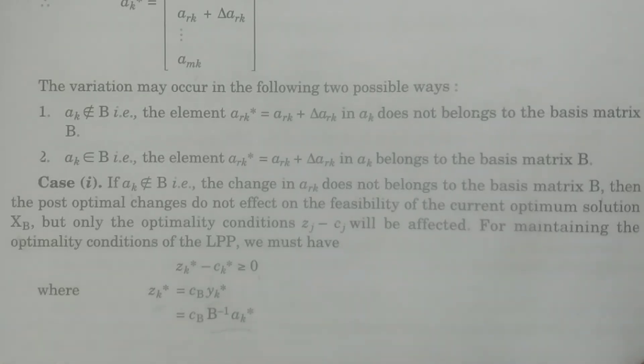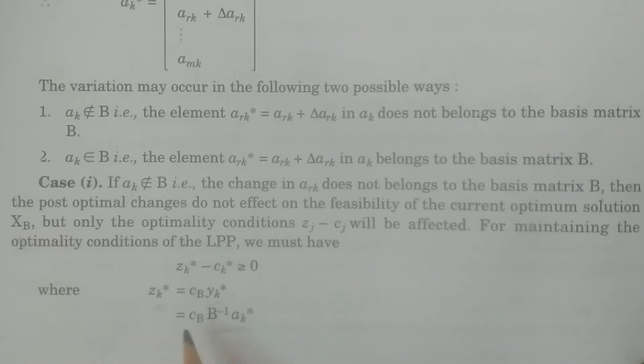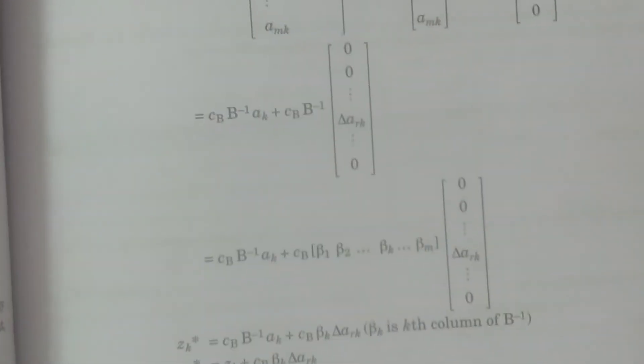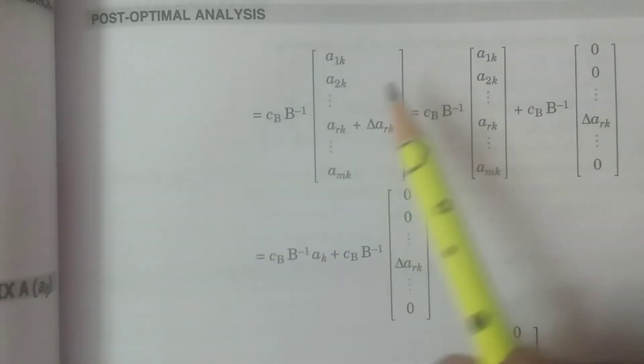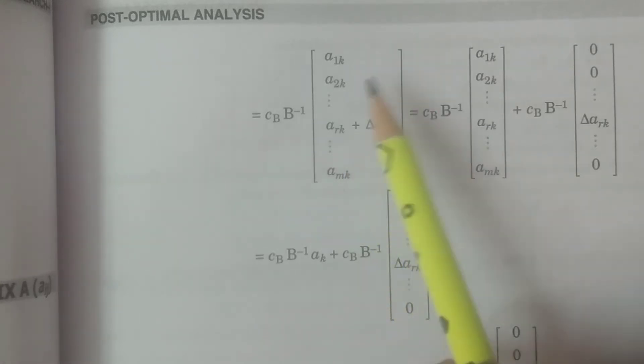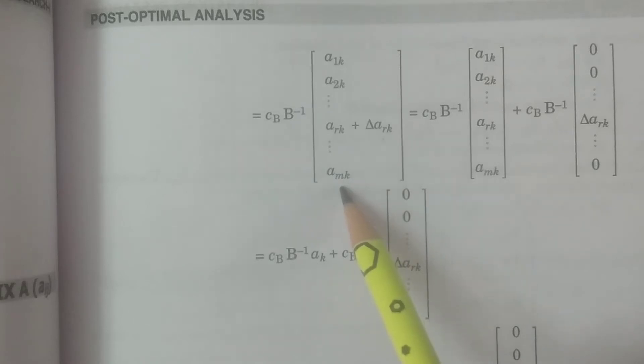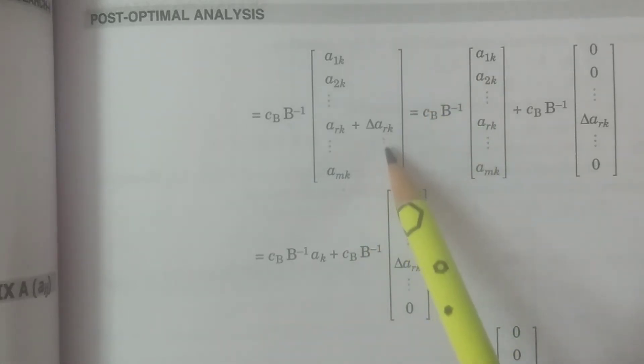We are calculating for the kth column vector where one particular element is changed. zk-star equals cb times B-inverse times ak-star. Now, cb times B-inverse times ak-star, where ak-star equals (a1k, a2k, ..., ark plus delta-ark, ..., amk).